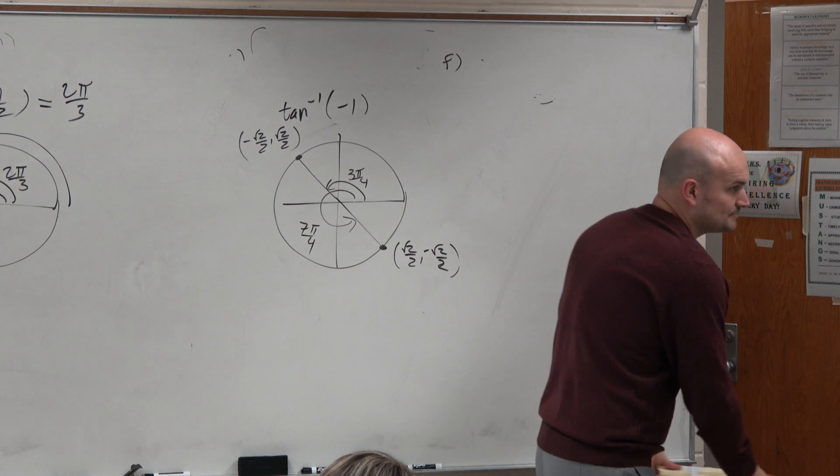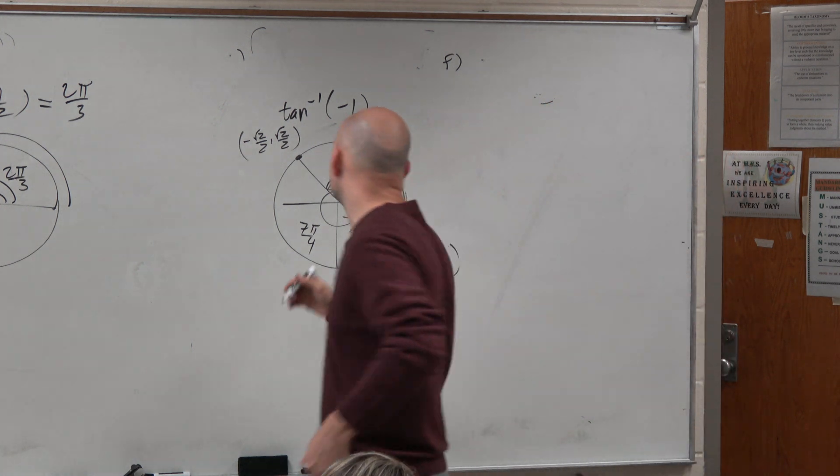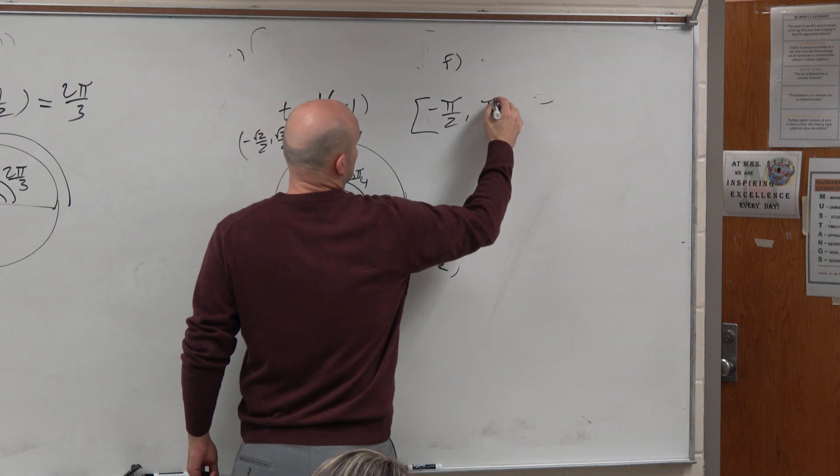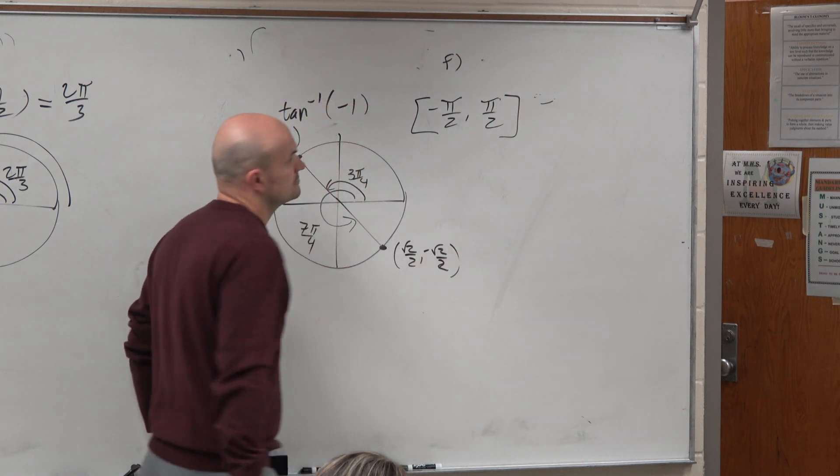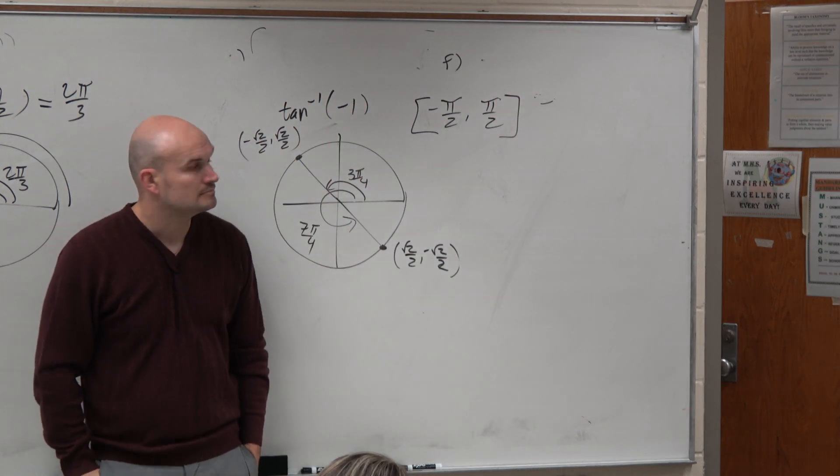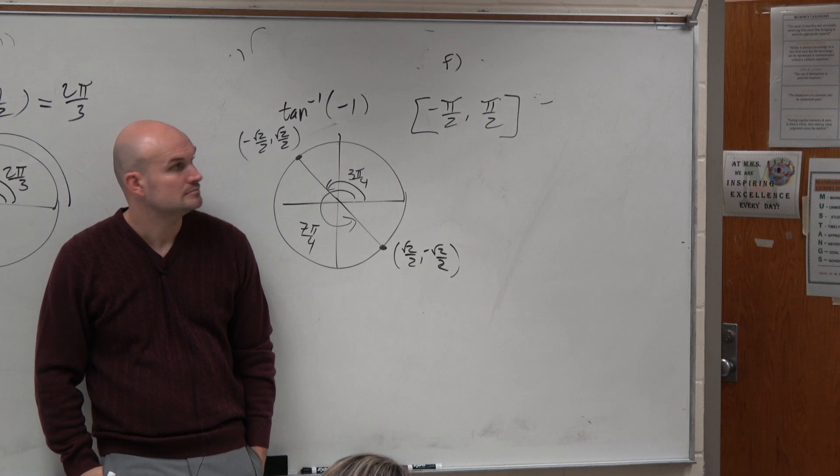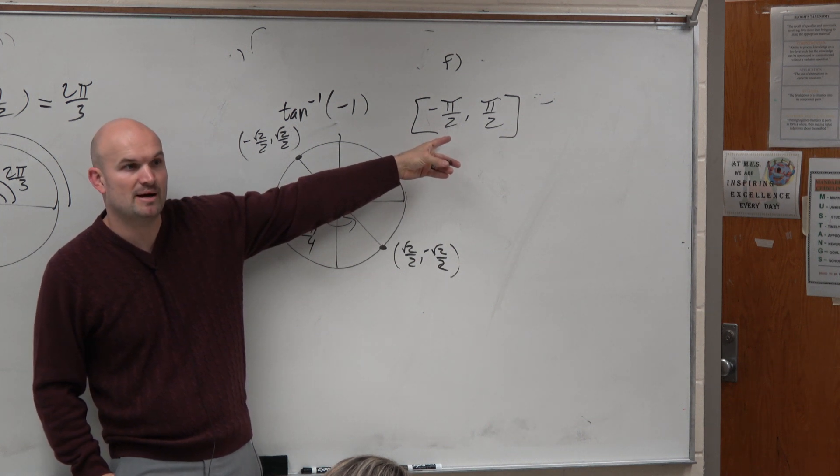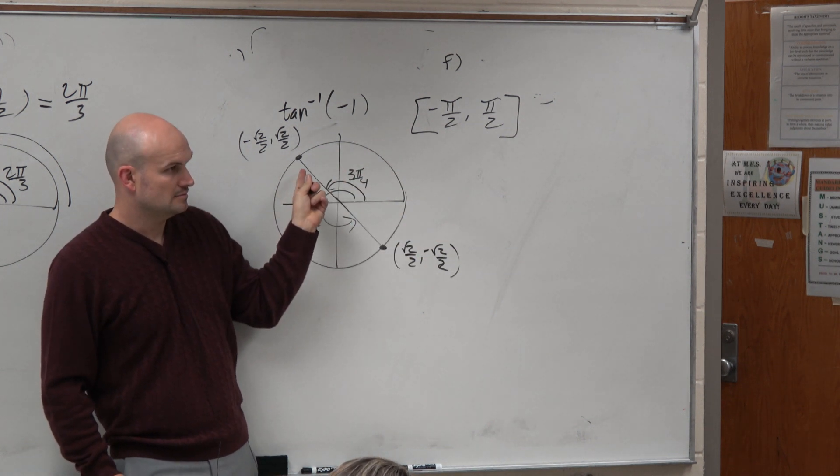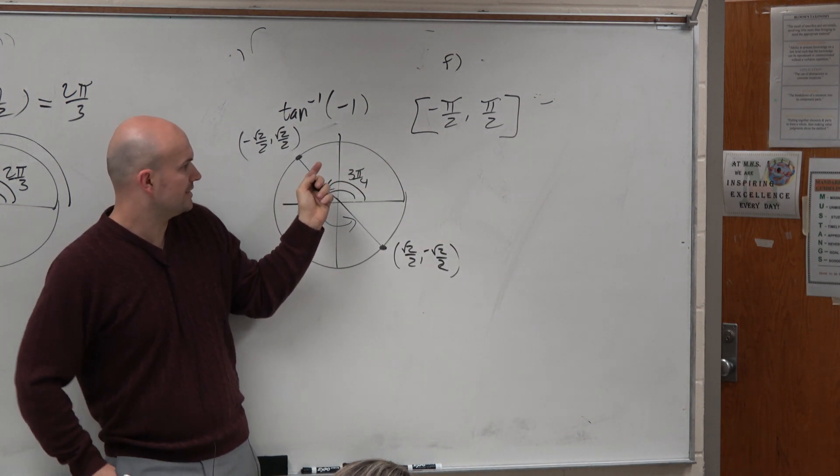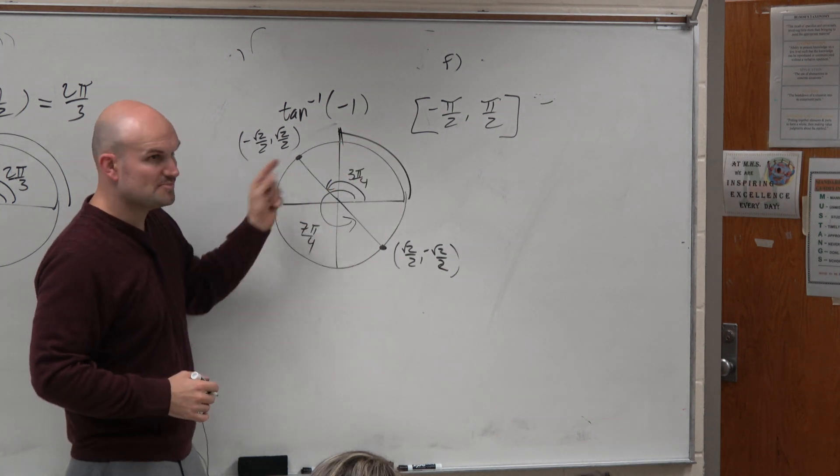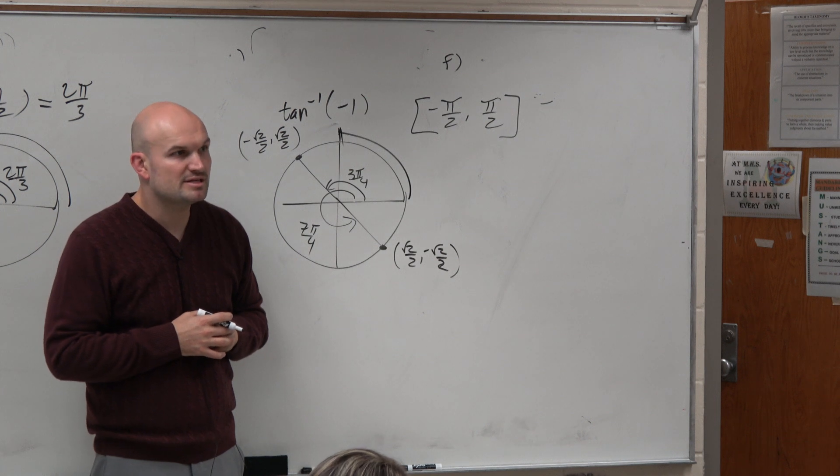But that comes in our problem. Because it's either one of those two angles within our restriction of our notes. Is 3 pi over 4 smaller than pi halves or greater than negative pi halves? No. Like, pi halves, guys, is from here to here. Right? Of course it's bigger. So 3 pi over 4 doesn't work.